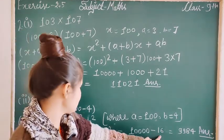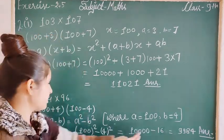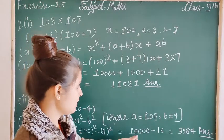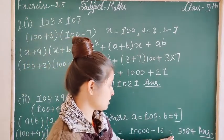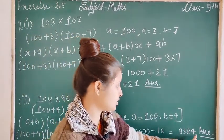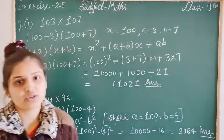So 10,000 - 16 = 9,984. This is the answer. The remaining questions are solved similarly.